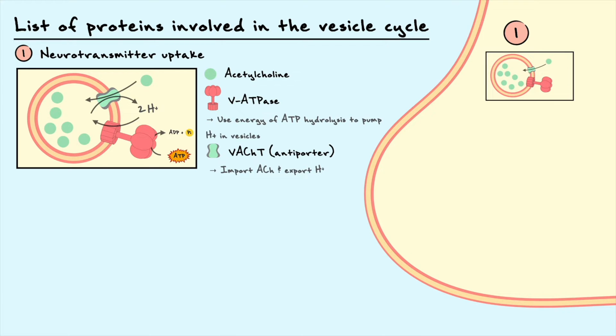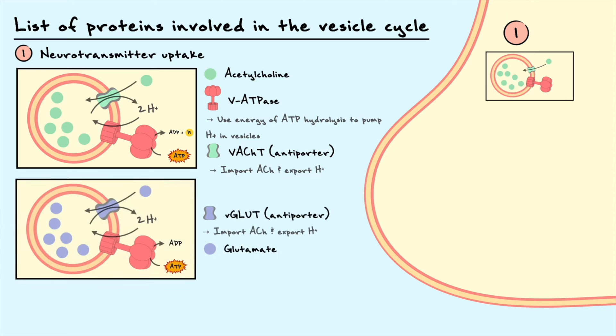The transporters are specific to the neurotransmitter. For example, the transporter for acetylcholine, the vesicular acetylcholine transporter, is different from the vesicular glutamate transporter, which imports glutamate, another neurotransmitter we will cover later.